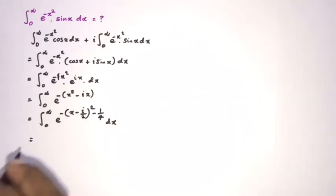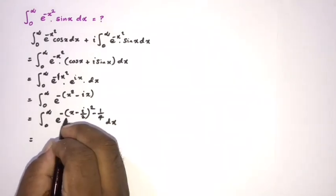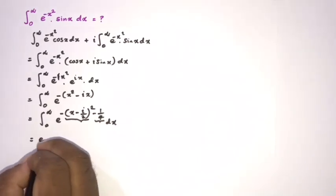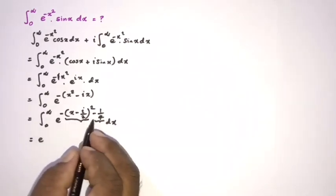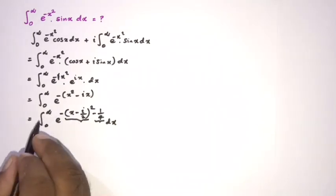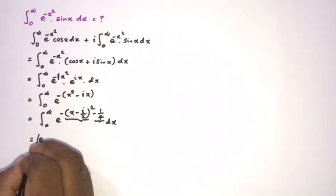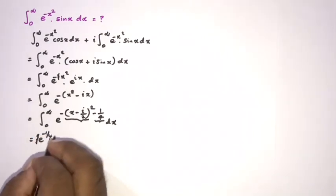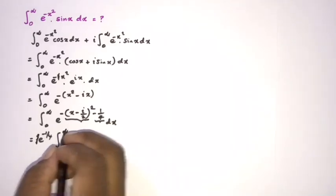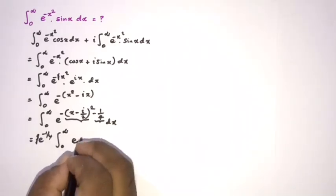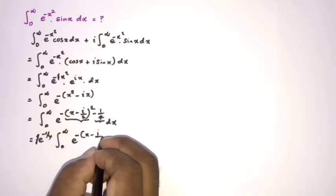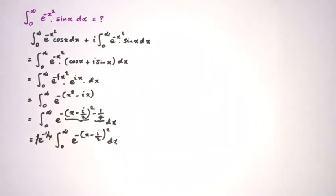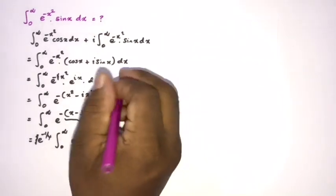Now we have e to the minus 1 over 4 as a constant factor. We can take it outside the integral sign, giving e to the minus 1 over 4 times the integral from 0 to infinity of e to the minus quantity x minus i over 2, squared, dx.